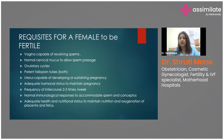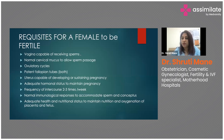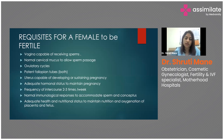Adequate hormonal status is needed to maintain pregnancy — this means an intact HPO axis, regular menstrual cycles, confirmed ovulation, normal thyroid function, normal prolactin levels, and no endocrinological disorders such as PCOS or hyper/hypothyroidism.